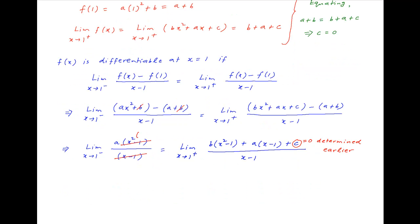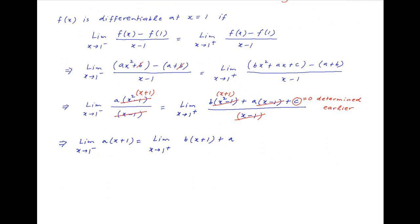After cancellation on the left-hand side, the expression simplifies to the limit as x tends to 1 from the negative side of a times (x plus 1). On the right-hand side, the limit as x tends to 1 from the positive side of b times (x plus 1) plus a.